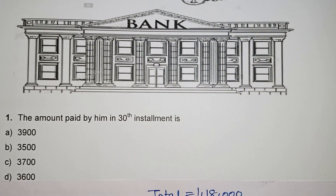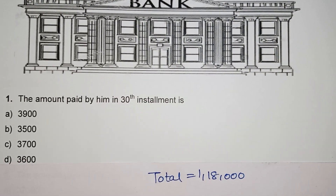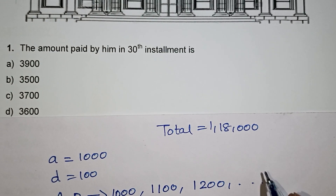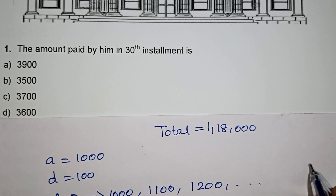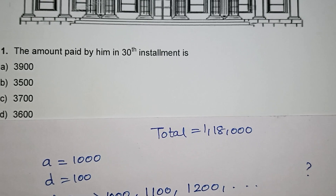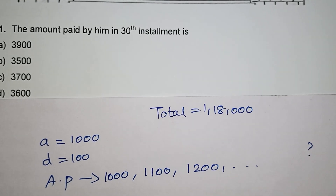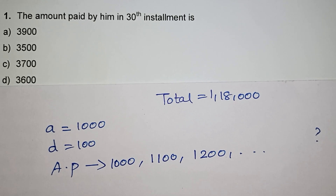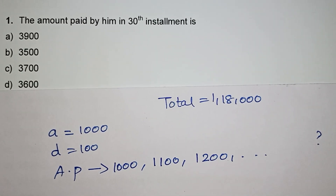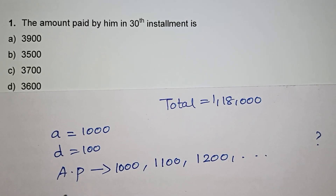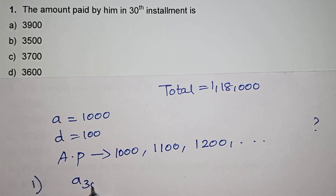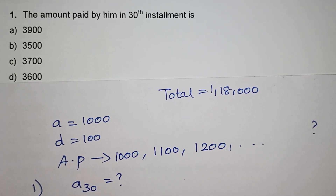Here comes the first question: the amount paid by him in the 30th installment. What will be the 30th installment amount? They are not asking the total amount paid up to the 30th installment — they are asking only what amount will be paid in the 30th installment. That is, they are asking what is A30.